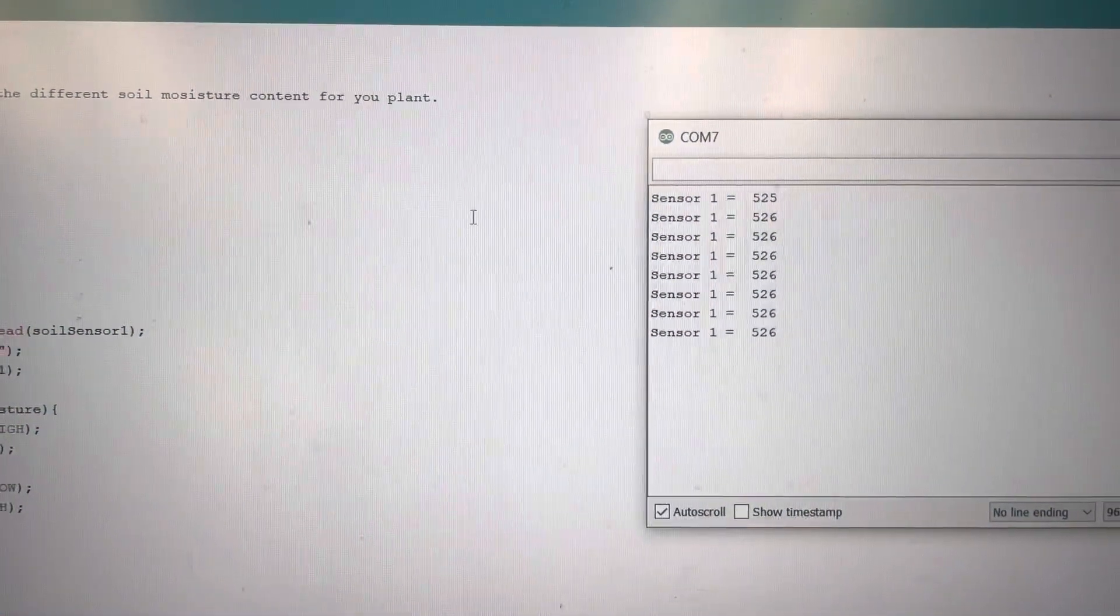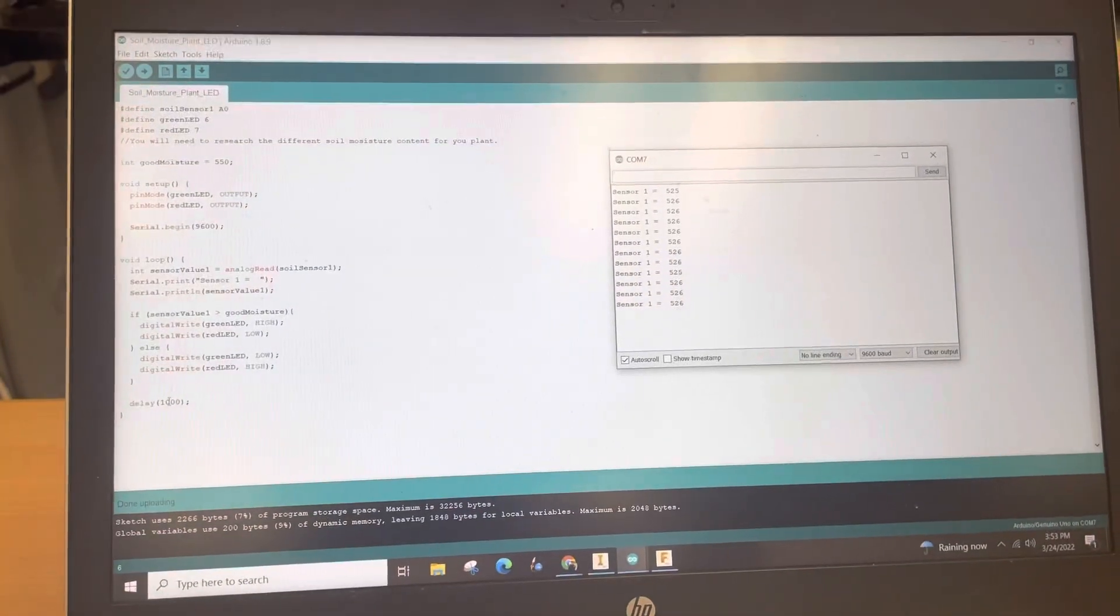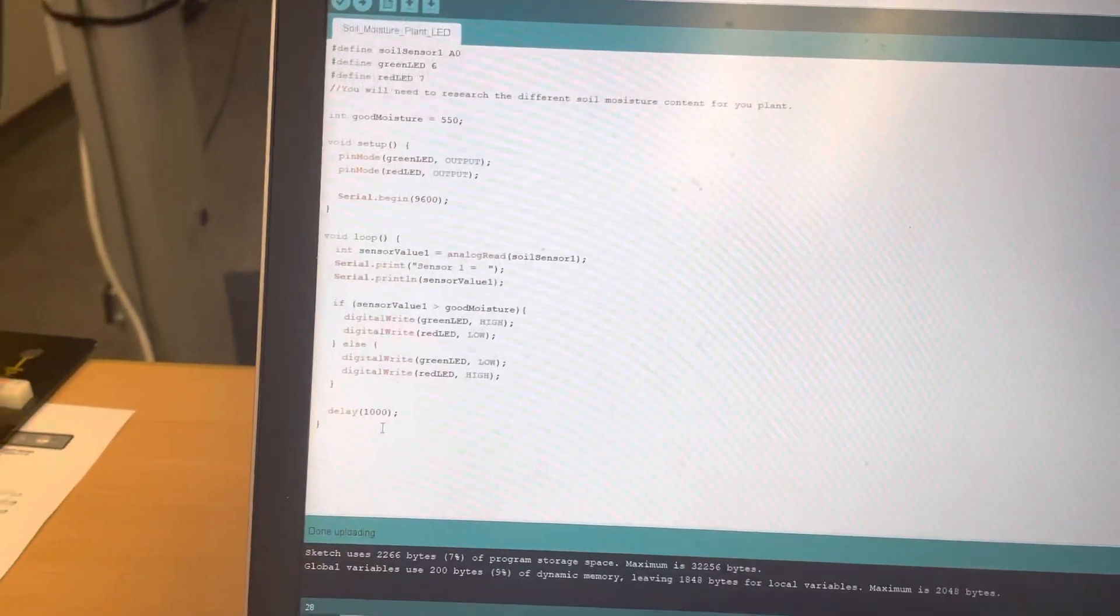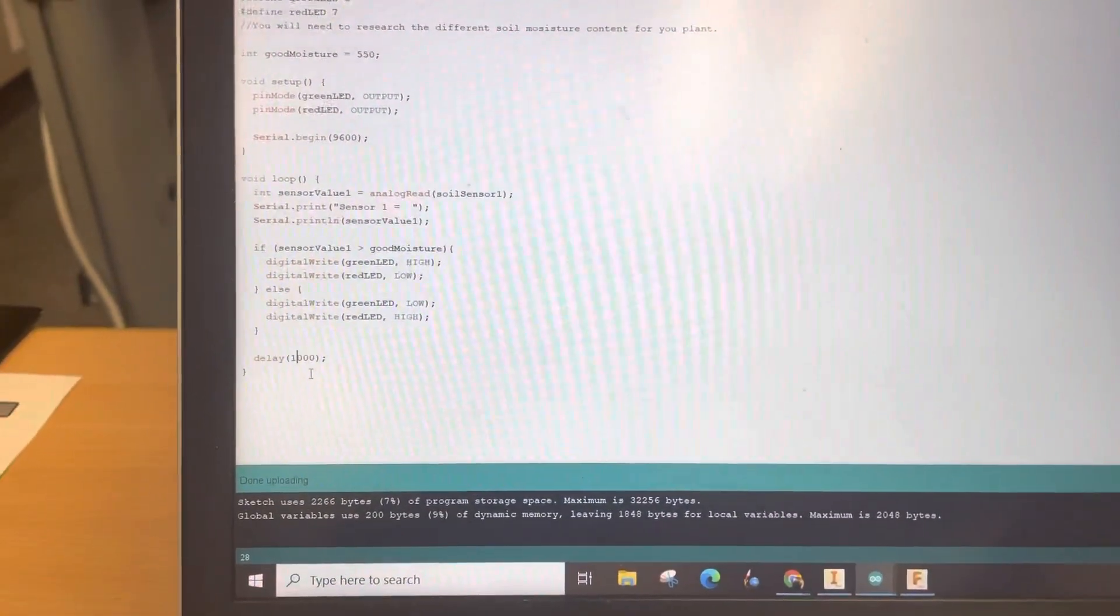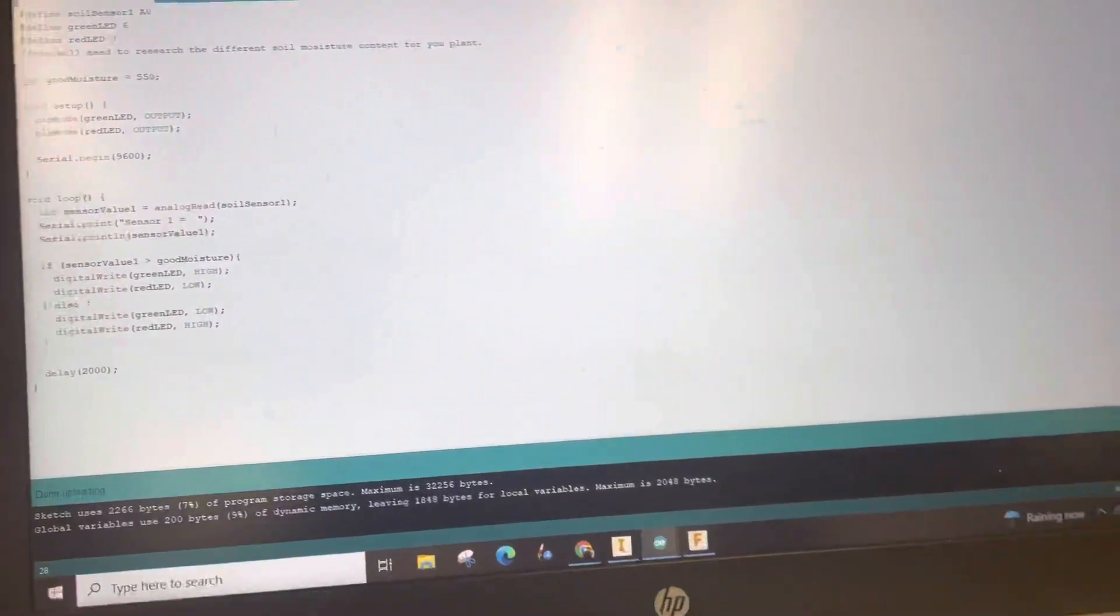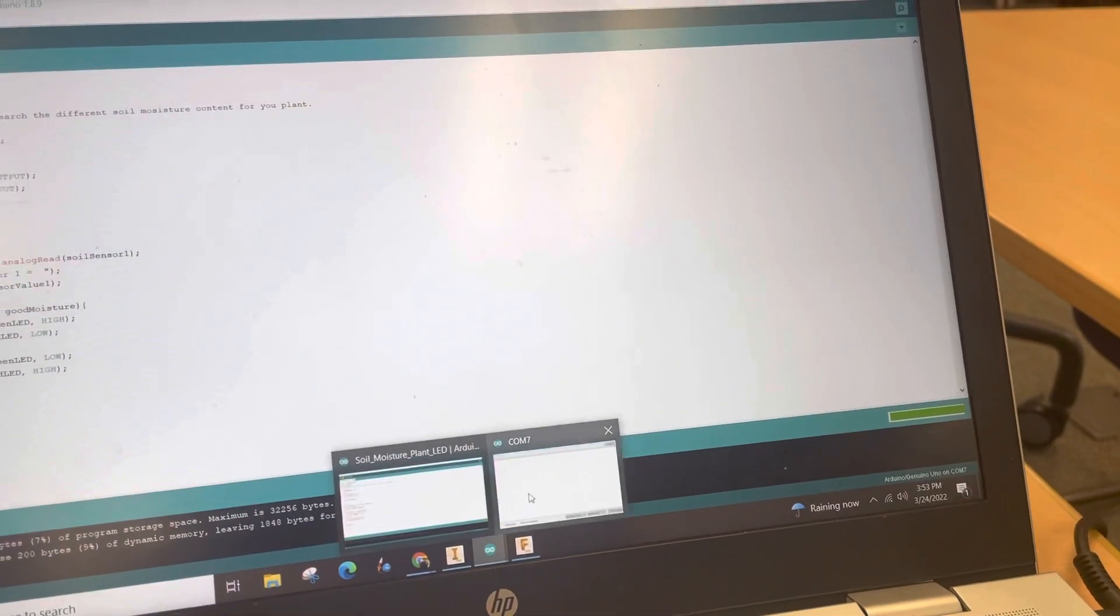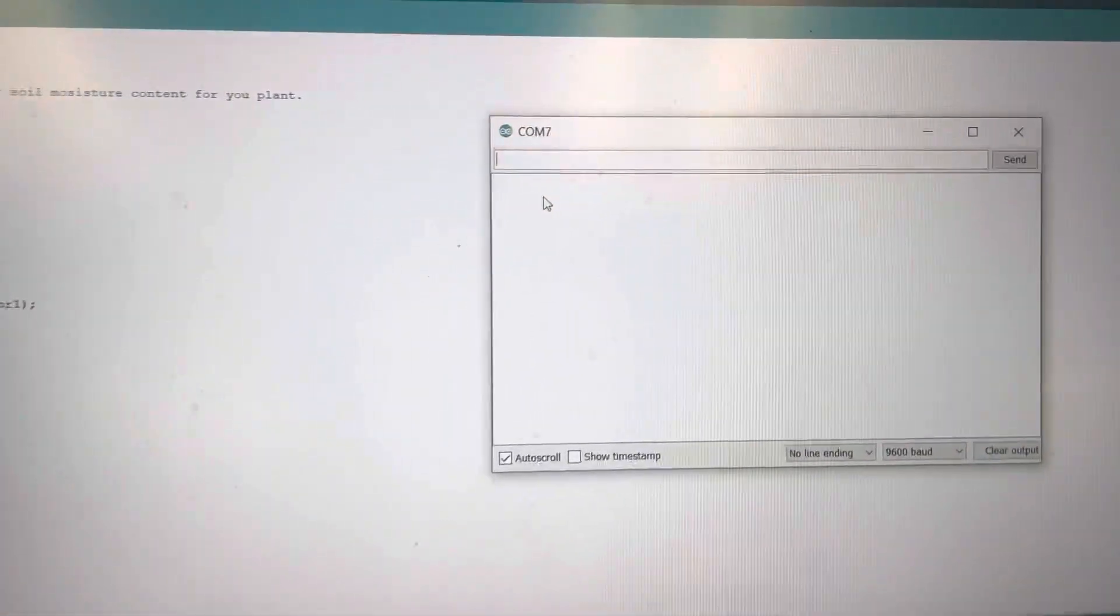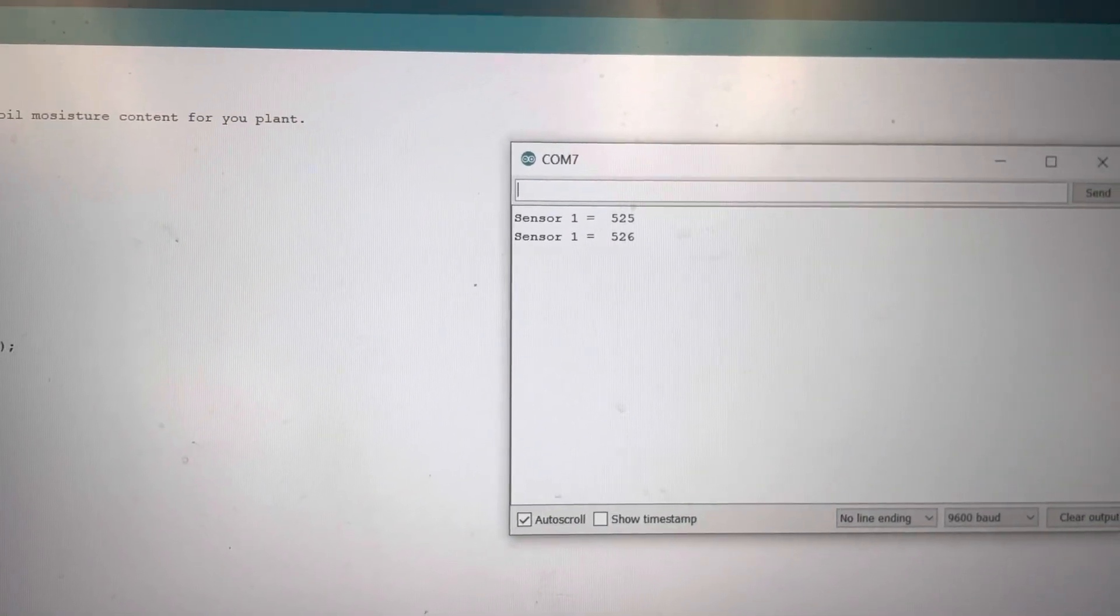And then finally, another thing that you can change down here is the delay. So it's triggering or delaying every second. I can say it goes two seconds, and when you send that, it will then give you a number every two seconds. So there we go, that's it.